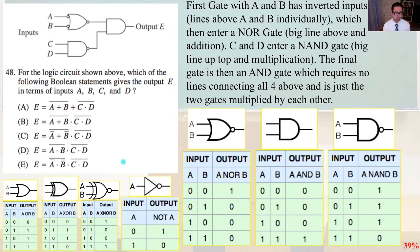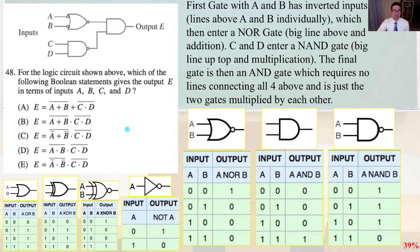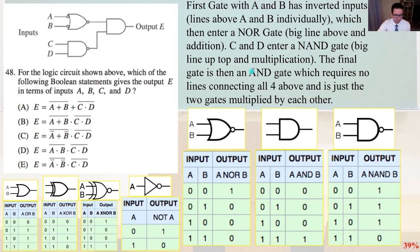Problem 48. For the logic circuit shown above, which Boolean statement gives output E in terms of inputs A, B, C, and D? The first gate has inverted inputs A and B (denoted by lines above each), entering a NOR gate. C and D enter a NAND gate. The final gate is an AND gate, multiplying the two previous gate outputs together. Combining everything, that gives us answer C.